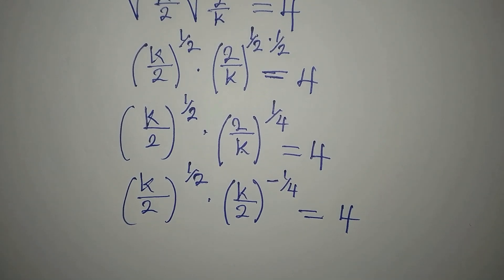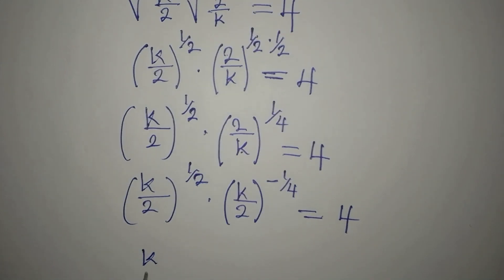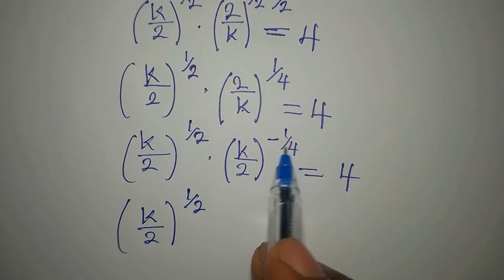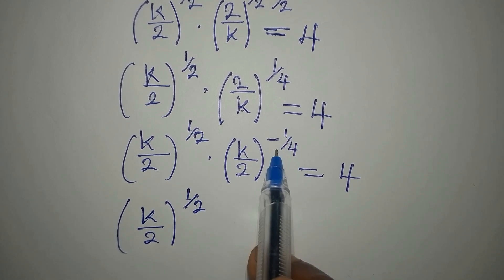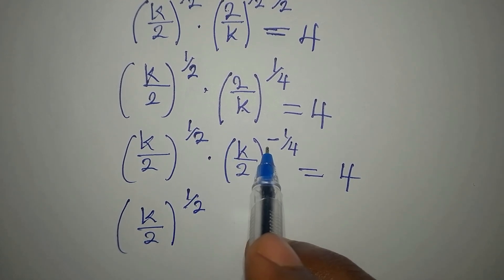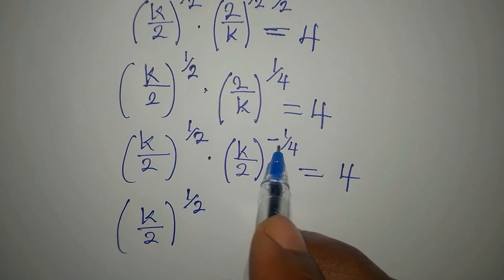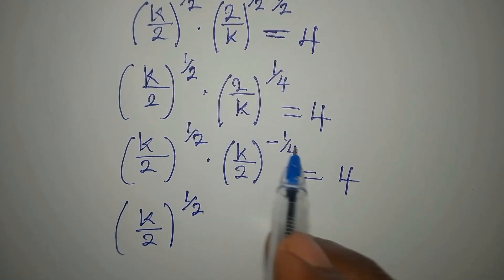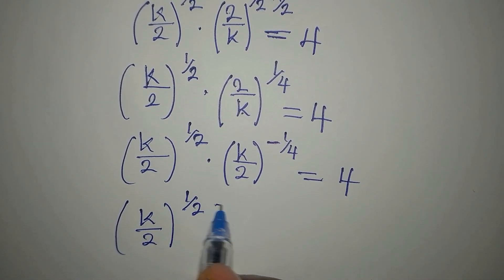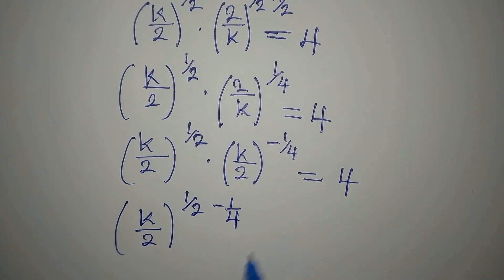Now the bases are the same, so we pick k over 2 as the common base and add the exponents: 1/2 plus negative 1/4. Since we have multiplication, we add the powers, but the negative takes control, giving us 1/2 minus 1/4, which equals 1/4. So we have (k/2)^(1/4) = 4.